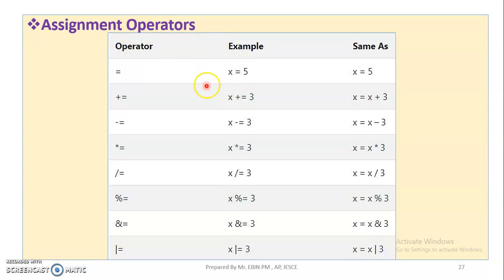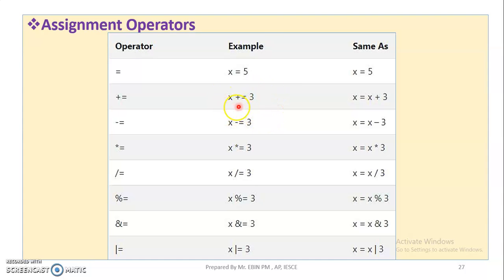Next, assignment operator. The single equal to assigns a value: the right side value is assigned to the left side variable. Then, plus equal to: x plus equal to 3 is the same as x equal to x plus 3 — this is the shorthand. Similarly, x minus equal to 3 is the same as x equal to x minus 3.